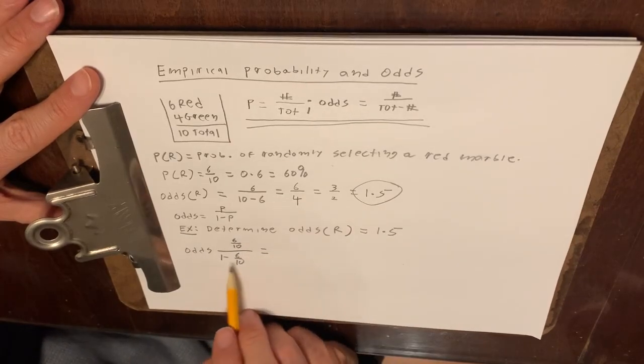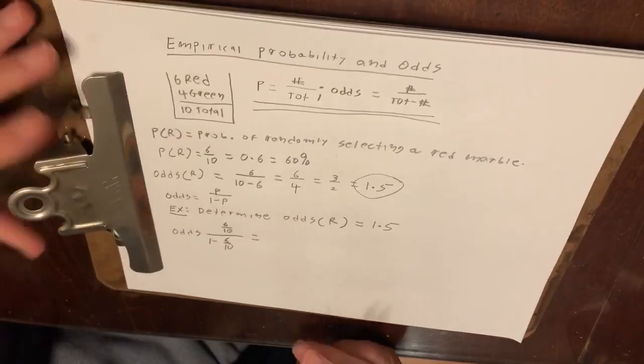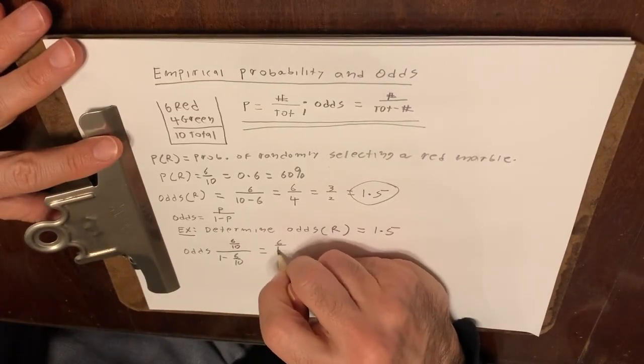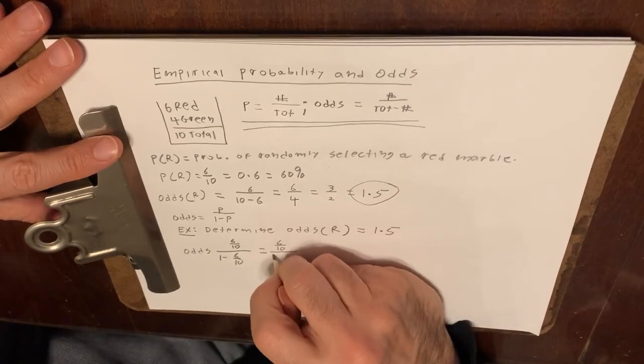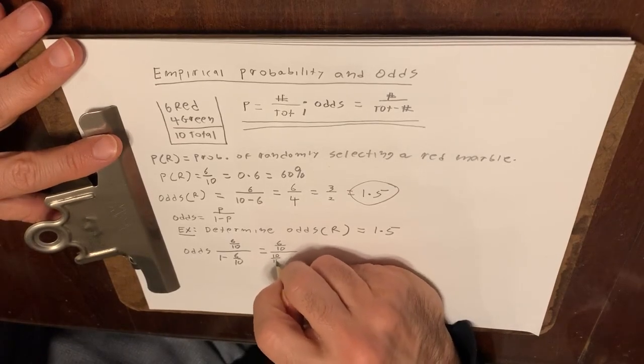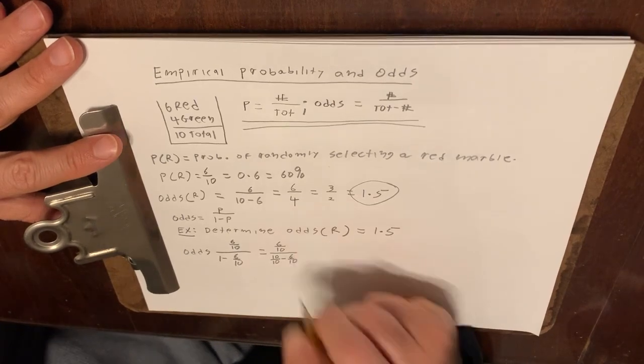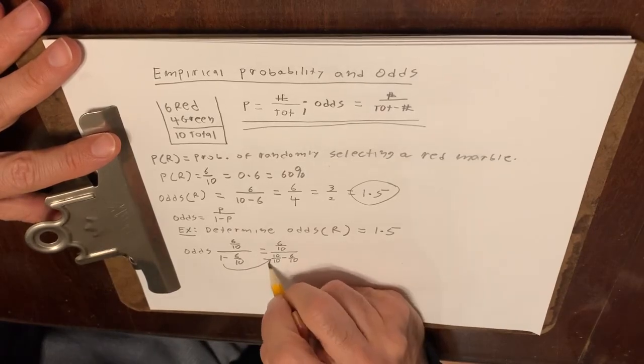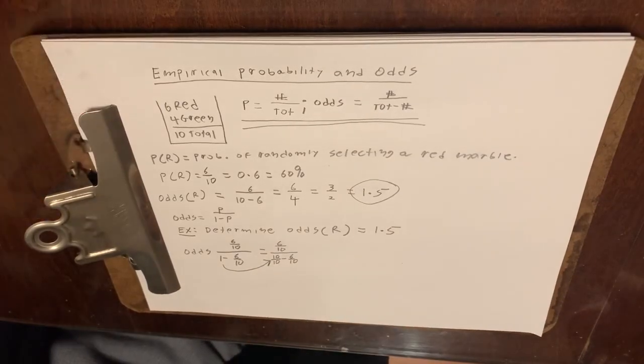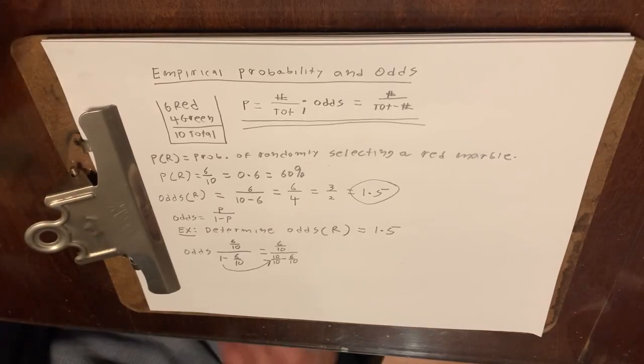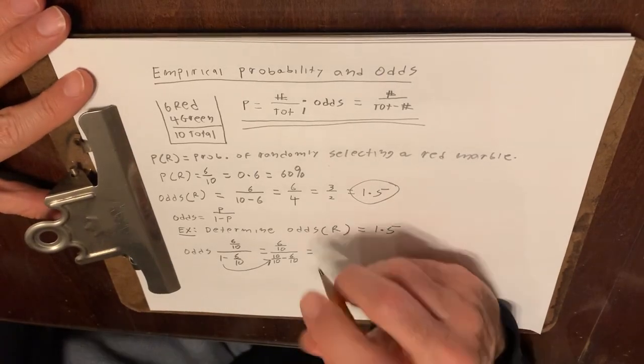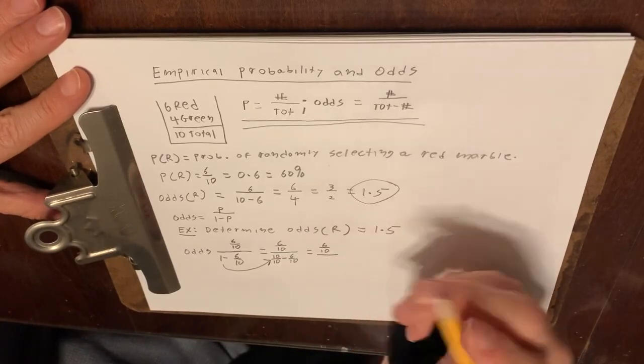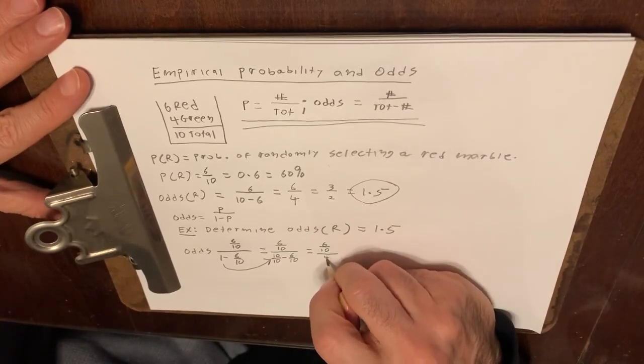Now if you remember adding and subtracting fractions, you need a common denominator. So I'd like to write this as 6 over 10 divided by 10 over 10 minus 6 over 10. So you'll notice I expressed this 1 as 10 over 10. In so doing, I now have a common denominator. So I can write this as 6 over 10 divided by, now you know 10 minus 6 is 4, 4 over 10.